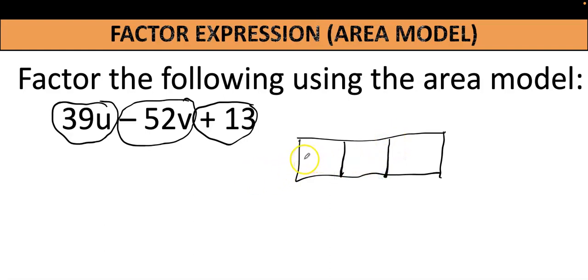So we have 39u, we have minus 52v, and we have plus 13. Okay, so in order, these are the areas. In order to find a width that is common to all three terms, you have to find a GCF.